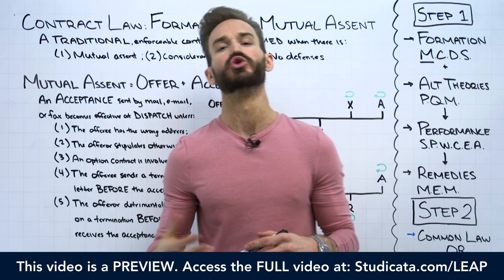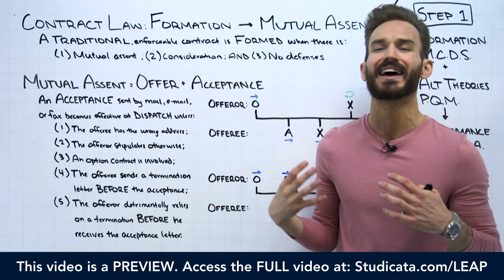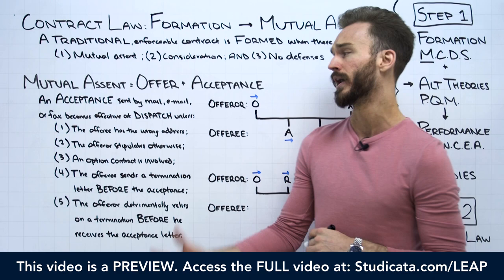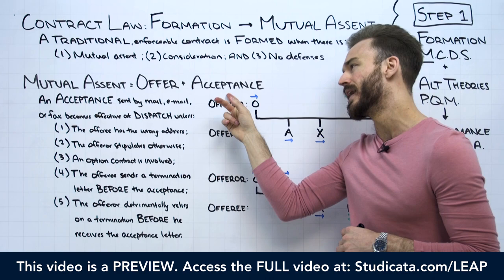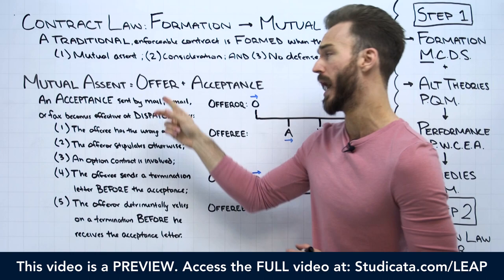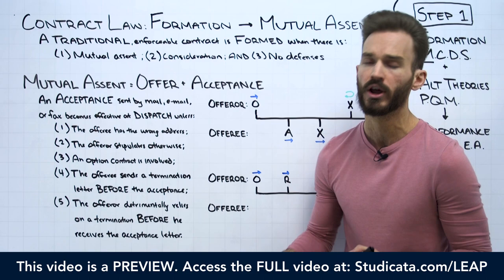Mutual assent is just this idea that in order to form a traditional enforceable contract, we need a meeting of the minds between the parties. On a contract law fact pattern, we need to determine whether we have a valid offer and a valid acceptance of that offer. If we find that we have offer and acceptance, we say we have mutual assent. At this point, we've talked about how an offer is formed, terminated, and validly accepted, which was the topic in our last video.